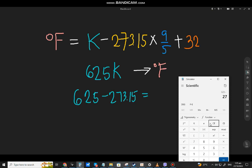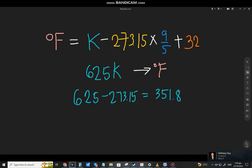625 minus 273.15 equals 351.85. Okay, now multiply it by 9. So that will be 351.85 times 9. The answer is...